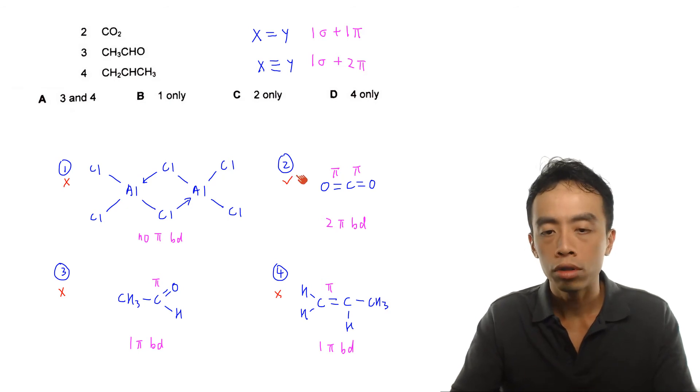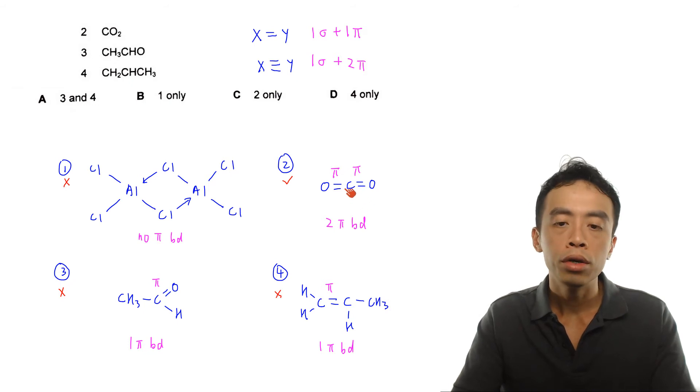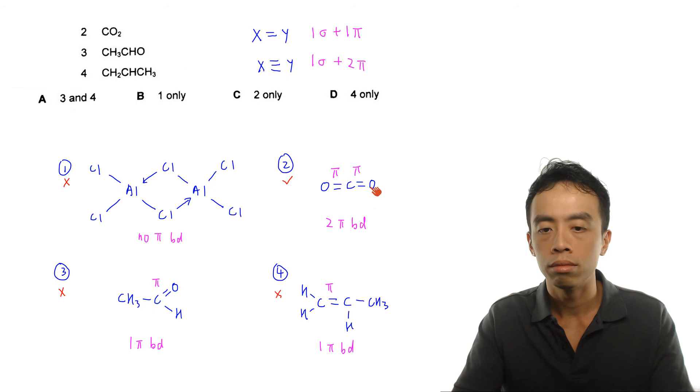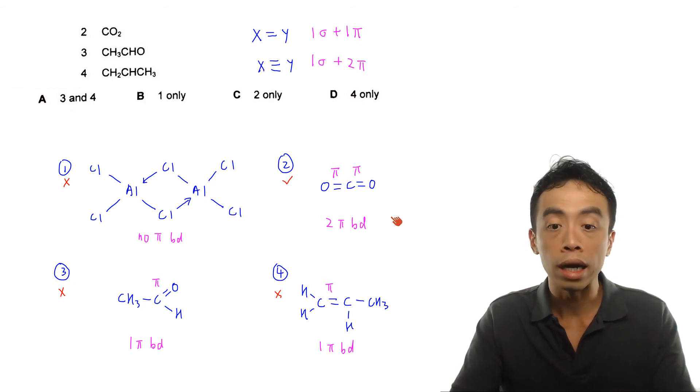Now moving on, option two, carbon dioxide, this is very straightforward. We should be able to draw this out very quickly and between carbon and oxygen it will be a double bond. So therefore I'll have one pi bond for each double bond. This carbon double bond oxygen will also have one pi bond. So carbon dioxide will have a total of two pi bonds and of course this will be part of the answer that we want.